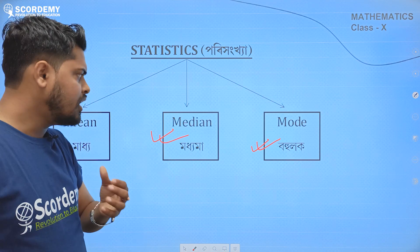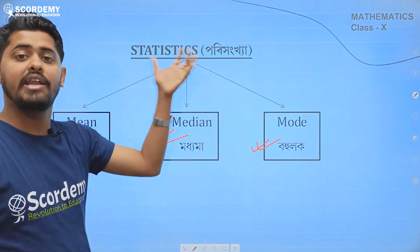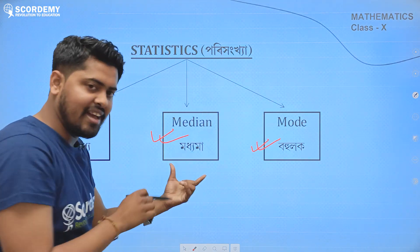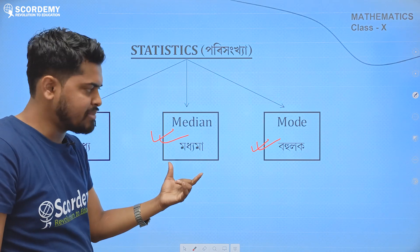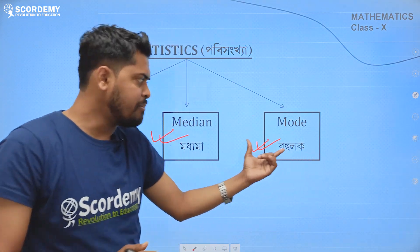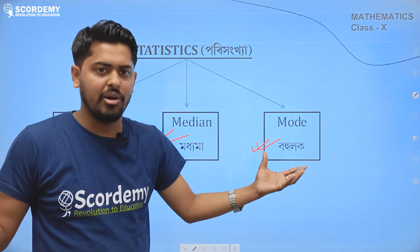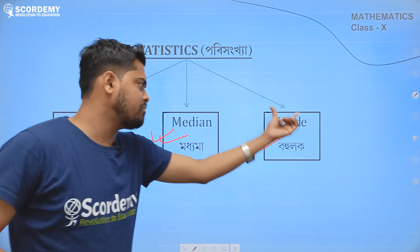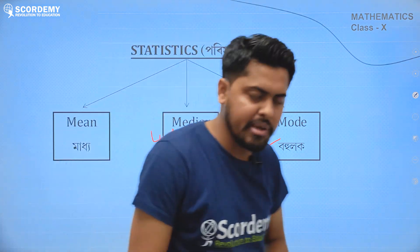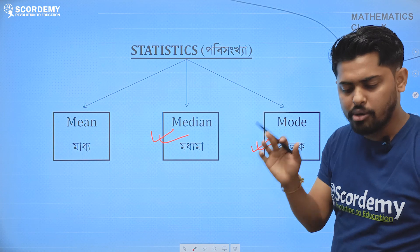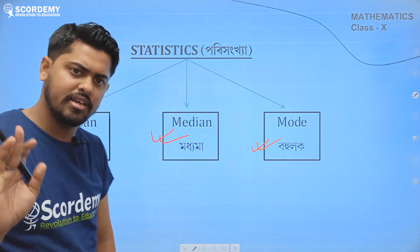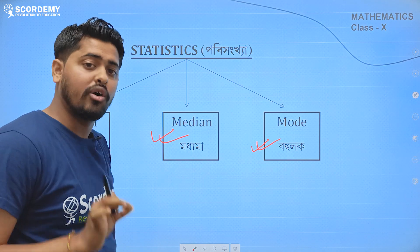In the previous papers, you can see that mean and mode are a bit different from each other, and the median is different as well. We know this is a 5-mark question. We have to find the mean and mode, and we can always find the mode using a formula. So today I will find the median for 5 questions. If you are watching this video, you will need to cover 5 questions. Clear?